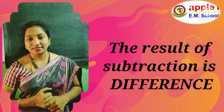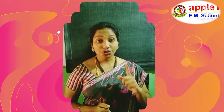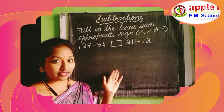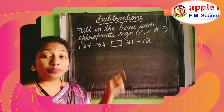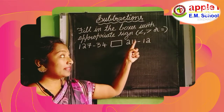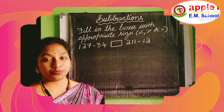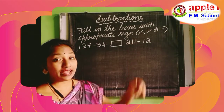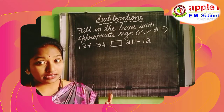In second standard we have already learned how to do subtraction with grouping and without grouping. Now we are going to learn how to compare the given numbers after doing subtractions. Let us see this question: fill in the boxes with the appropriate sign — less than, greater than, or equal to. See this one: 127 minus 34 and 211 minus 12.